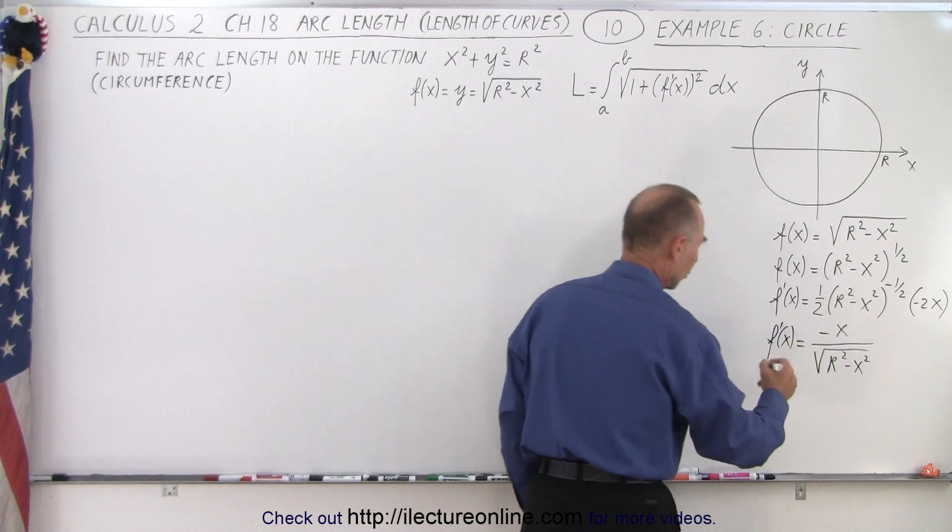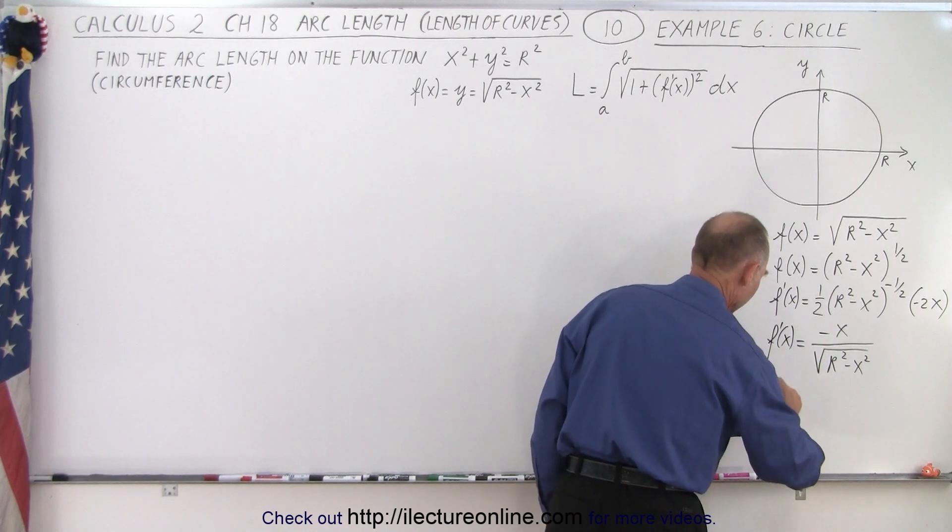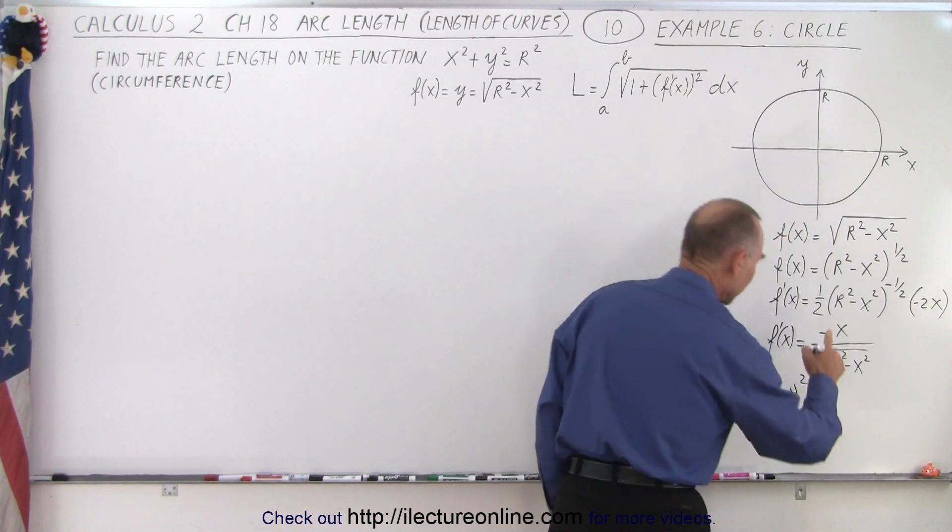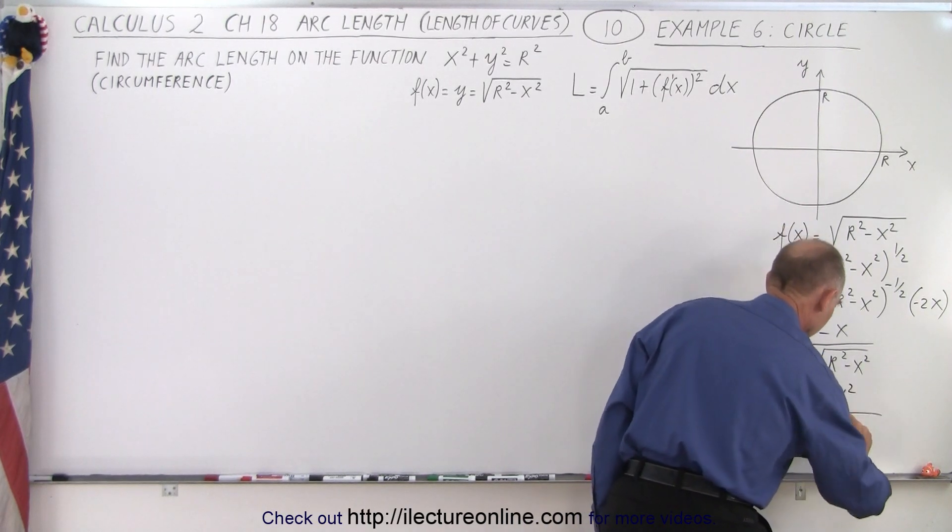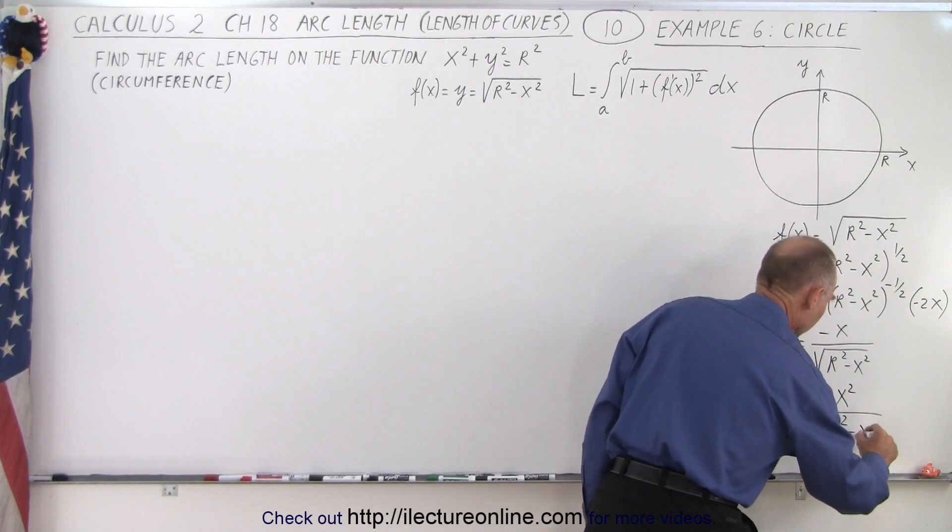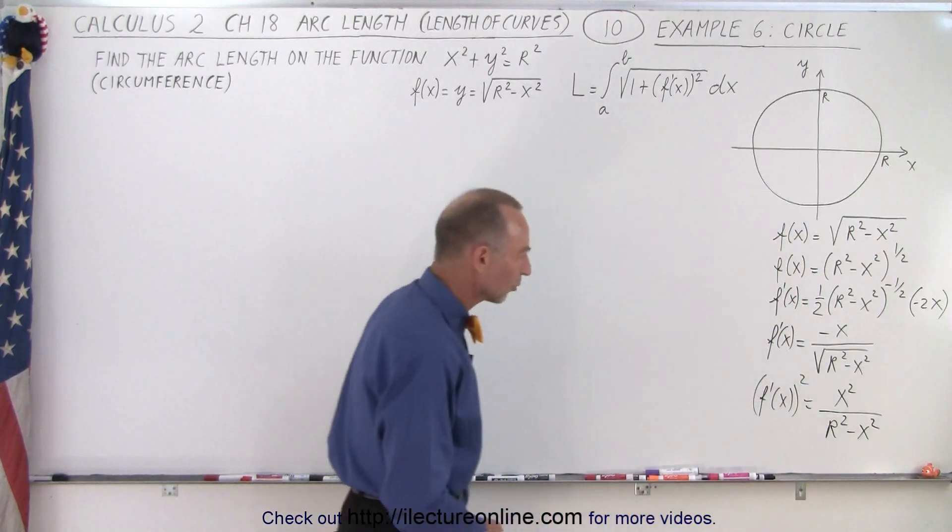Now we're going to square it. So when we square that f'(x) squared, that means the negative disappears. We end up with x² divided by, in the denominator, we get r² - x², like this, without the square root.